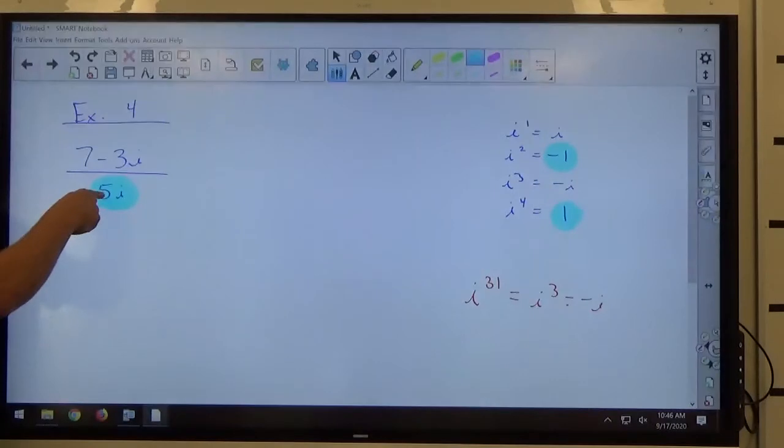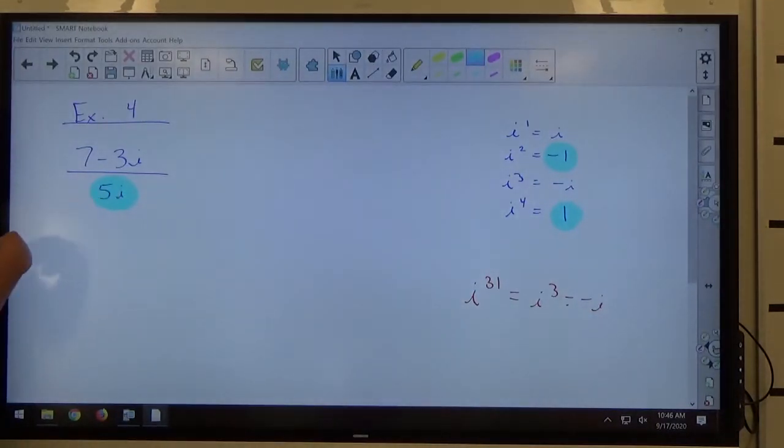And again, I want this to be a real number. So all I have to do to make this 5i become a real number is I need i to become i squared, because i squared is a real number, negative 1, right?